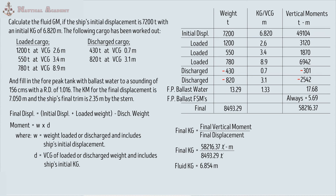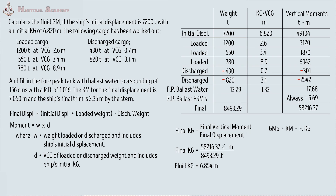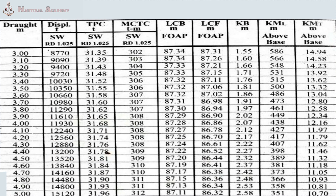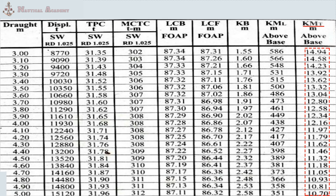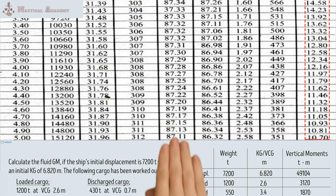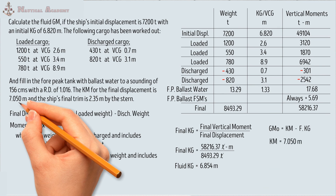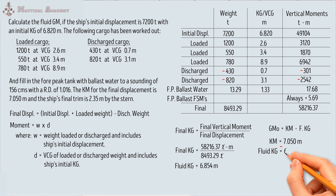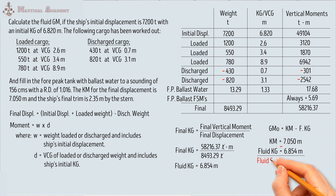To find the fluid GM, the formula is: fluid GM equals the KM for the final displacement minus fluid KG. You can find the KM value on the ship's hydrostatic table. In the hydrostatic table, the first column shows the ship's mean draft, the second column shows displacement in salt water, and the last column contains KM values. Use the KM transverse value since we are calculating the vertical distance. The given KM in this problem is 7.050 meters minus the fluid KG of 6.854 meters. The fluid GM is positive 0.196 meters. Our GM is positive since the KM value is greater than KG, so the ship is in a state of stable equilibrium.